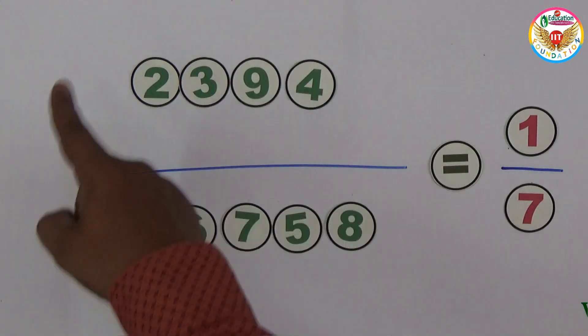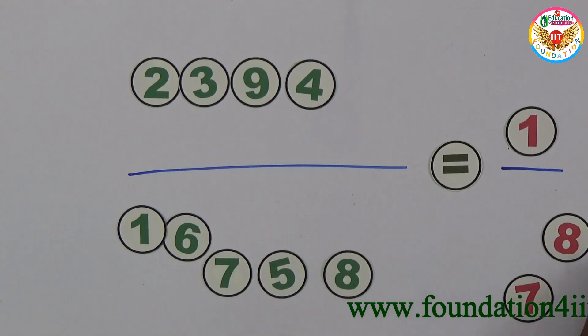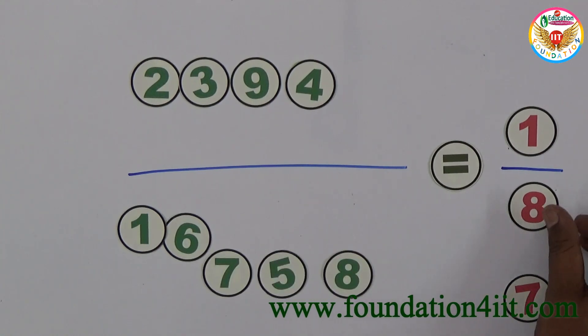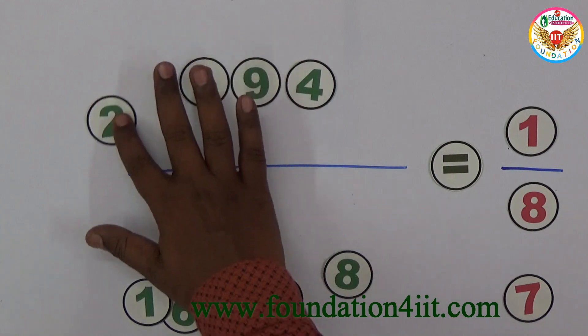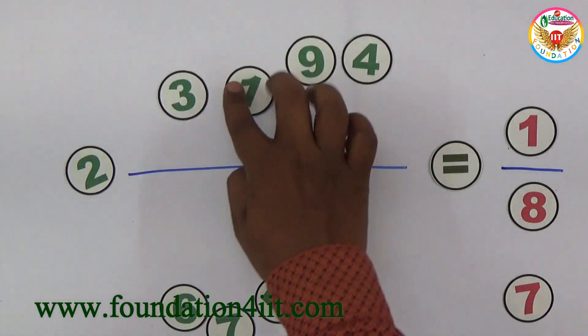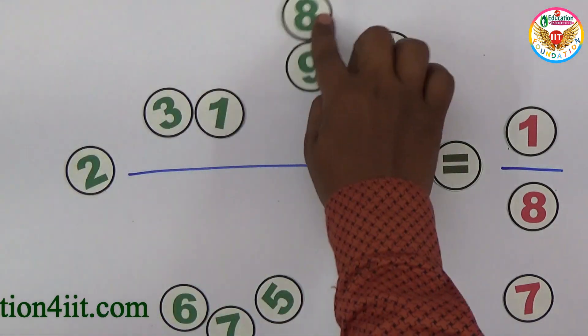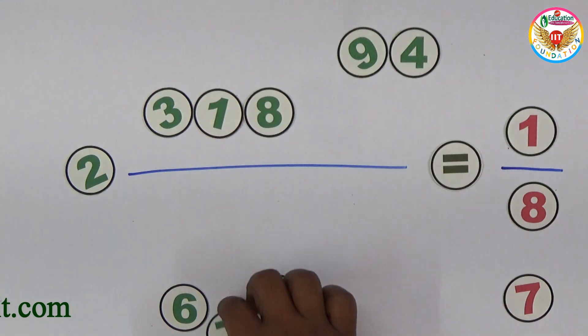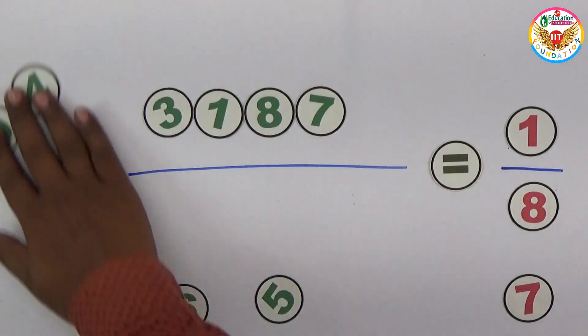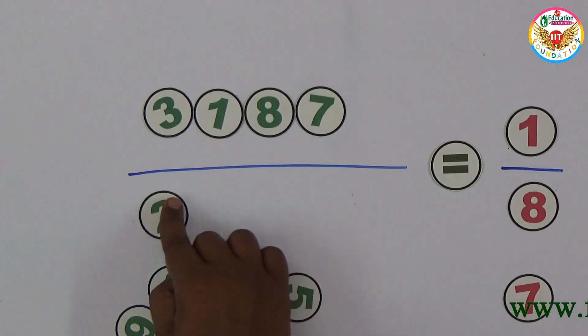To get 8, to prove 1/8, here is a solution: 3187 in the numerator place, and for this, 8 times is 25496. This is the denominator, and for this, 8 times is 25496.